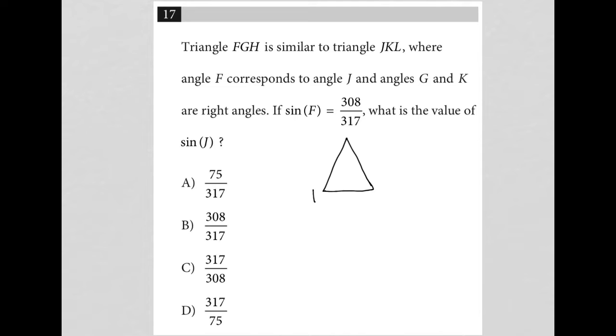I'm gonna call this FGH and in the same vein, in the same exact order, I'm gonna call this JKL where angle F corresponds to angle J. That's usually how it works - the three-letter order here matches the three-letter order here.